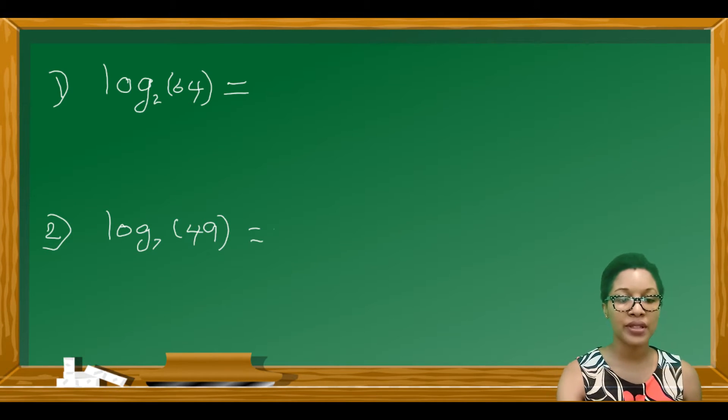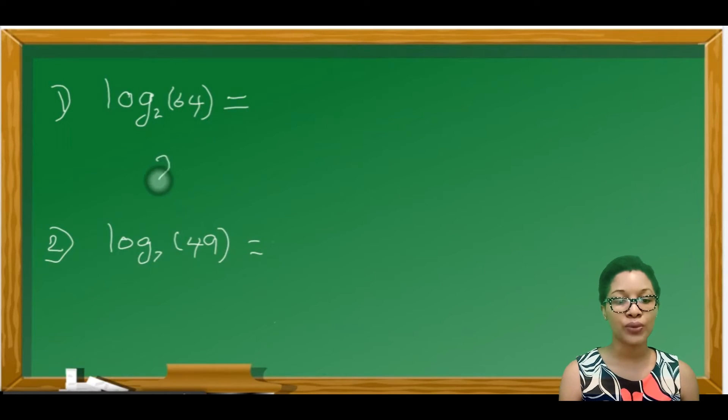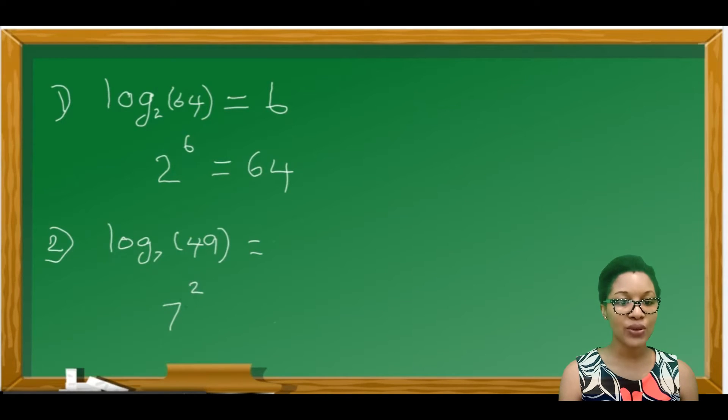Let's do these two examples. Log base 2 of 64 is equal to what? And log base 7 of 49 is equal to what? So we know that 2 to the power of something will give 64. 2 to the power of 6 will give you 64, so the answer is 6. Next, 7 to some power will give you 49, which is 7 squared, so the answer is 2.